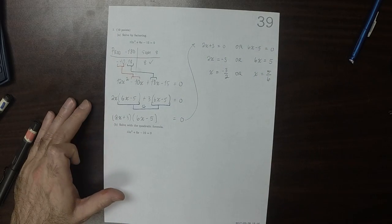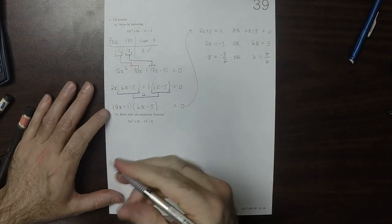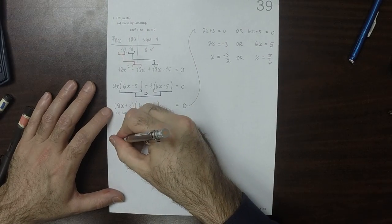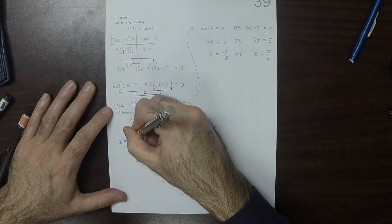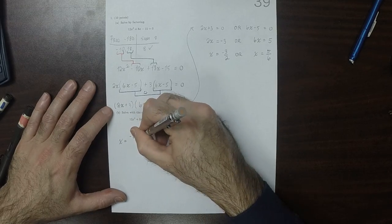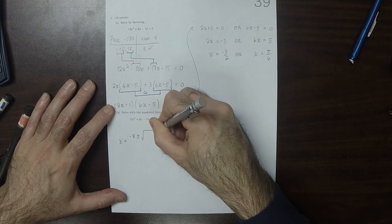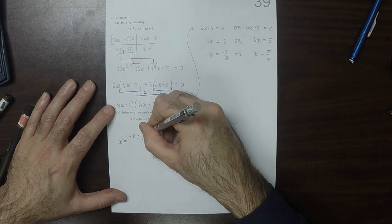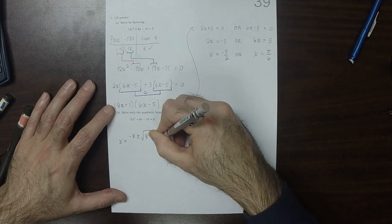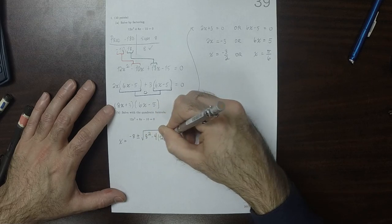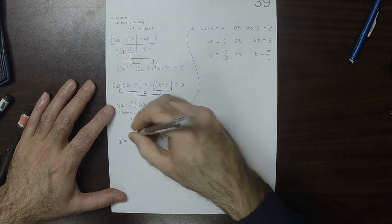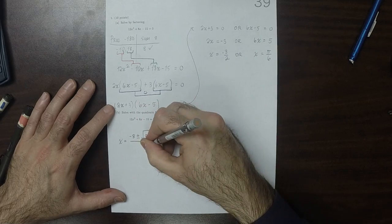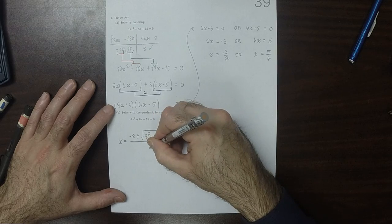So those two possibilities now solved with the quadratic formula. So x is negative 8 plus or minus the square root of 8 squared minus 4 times 12 times negative 15. All of that divided by 2 times 12.